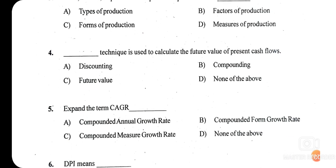Question five: CAGR stands for what? The right answer is option A — Compounded Annual Growth Rate. CAGR is a business and investing specific term for a geometric progression ratio that provides a constant rate of return over a time period.